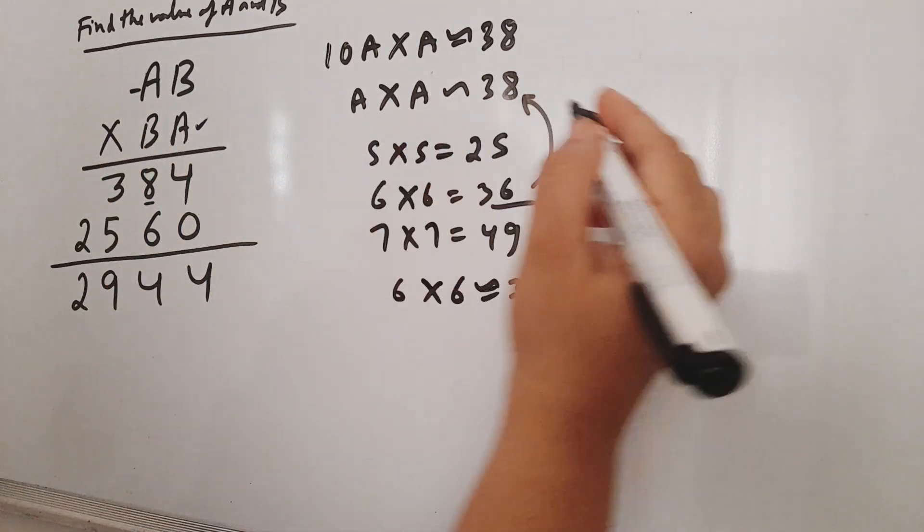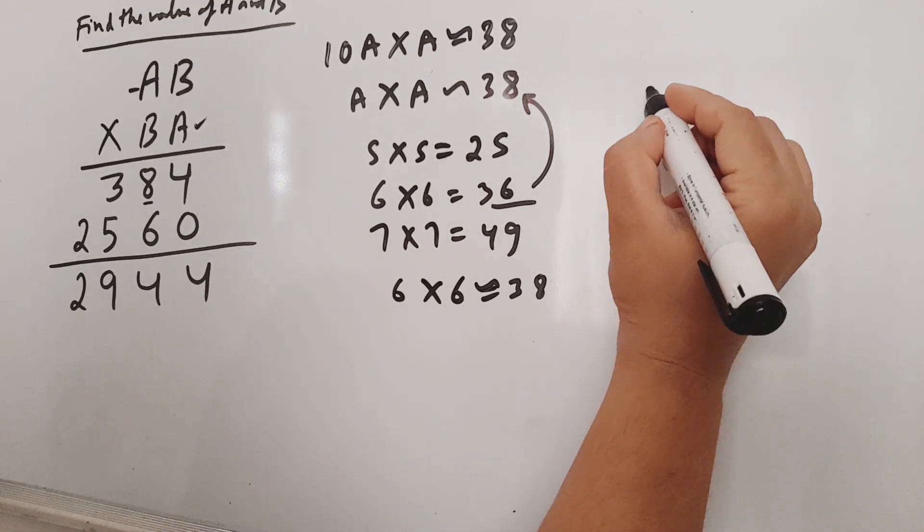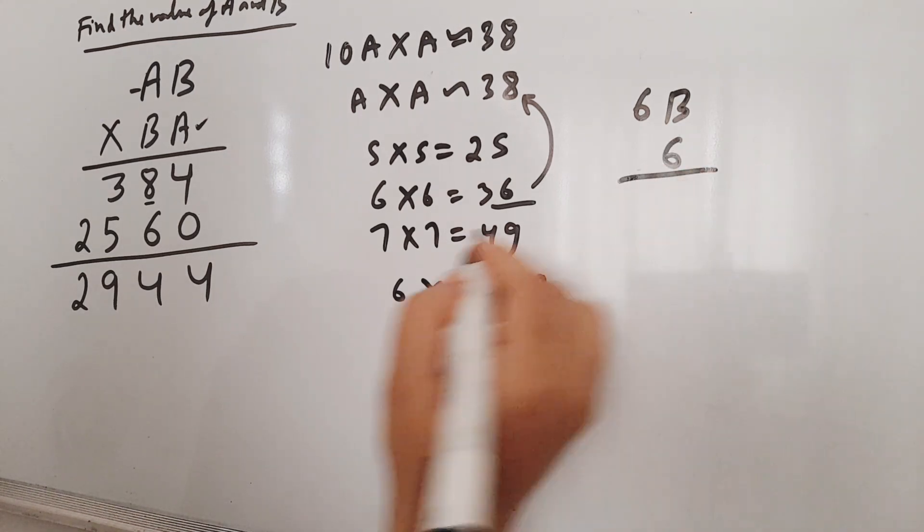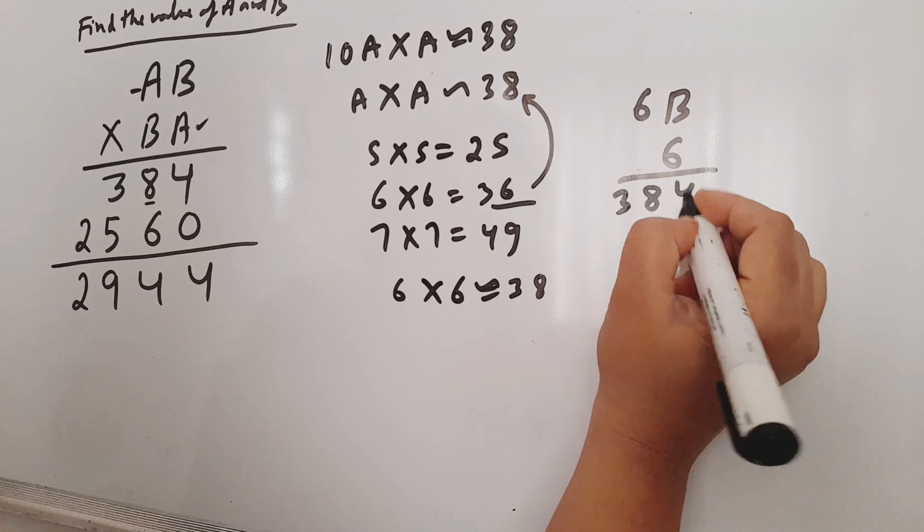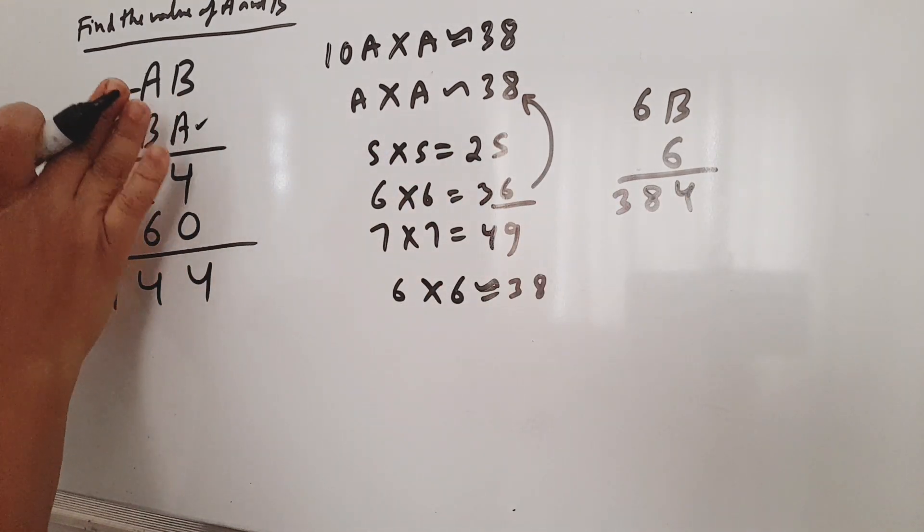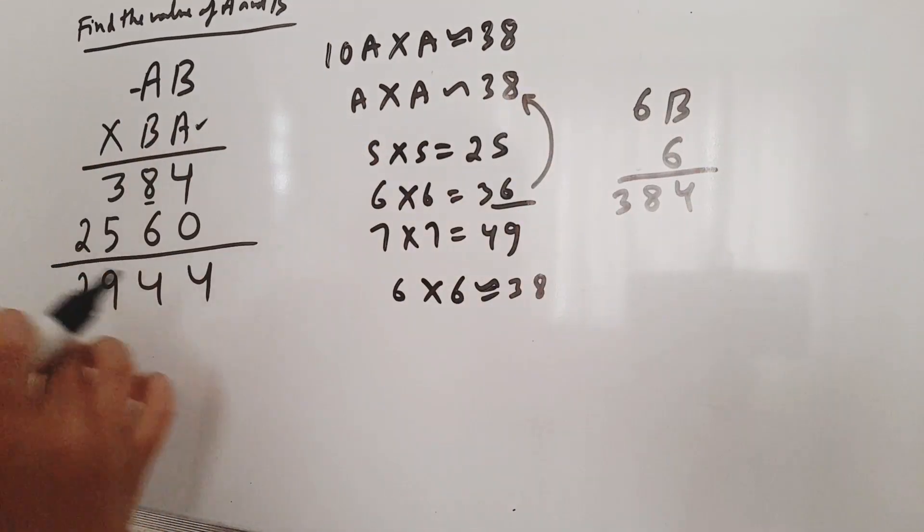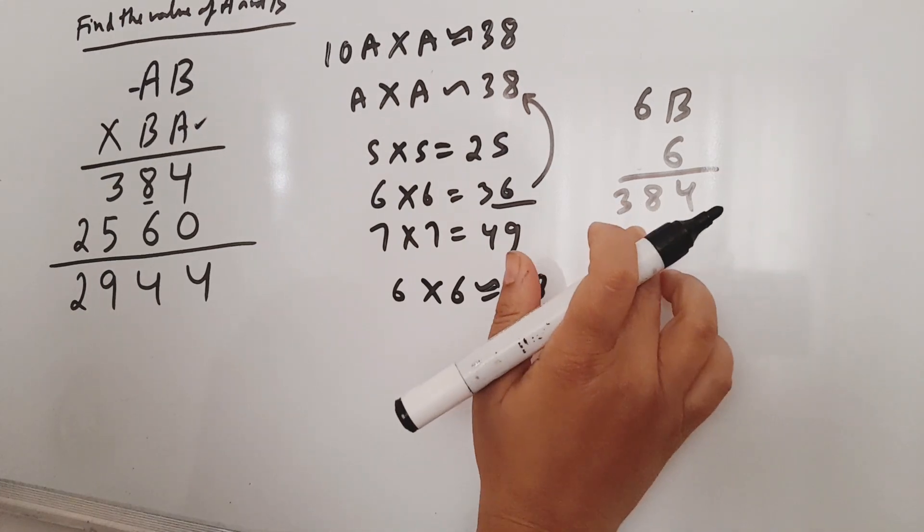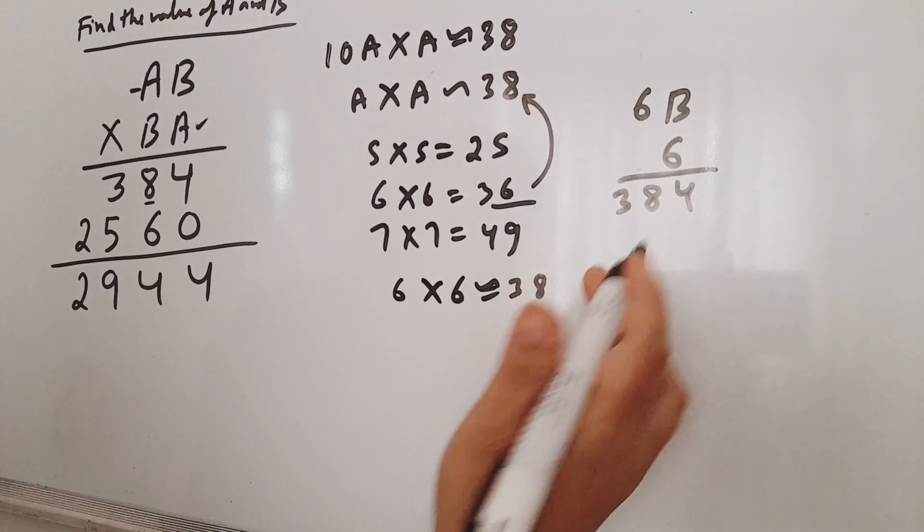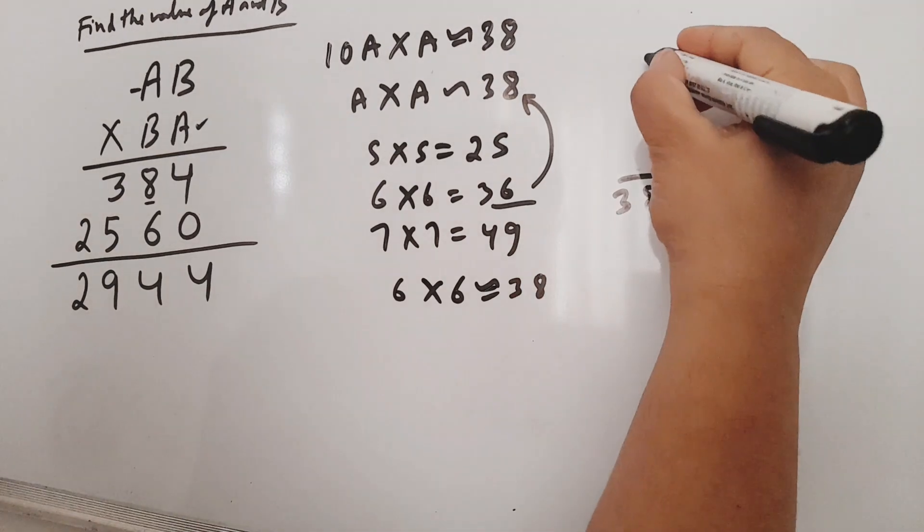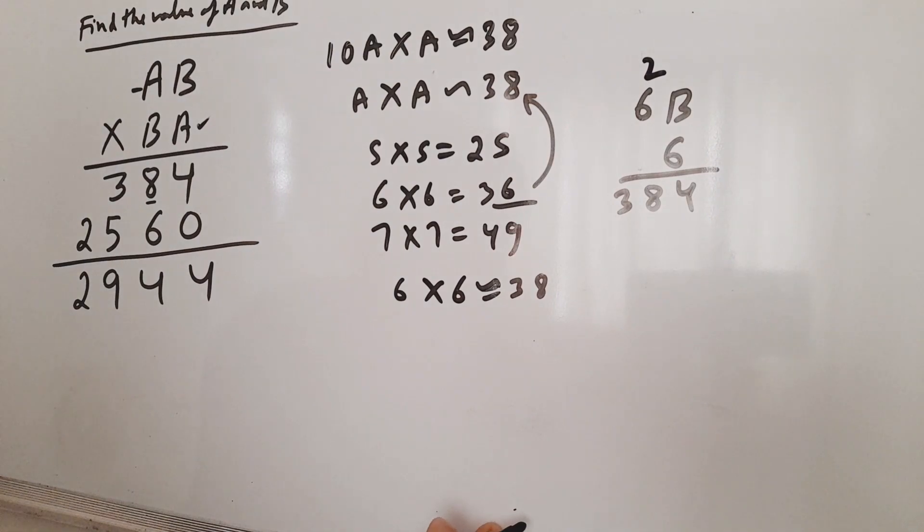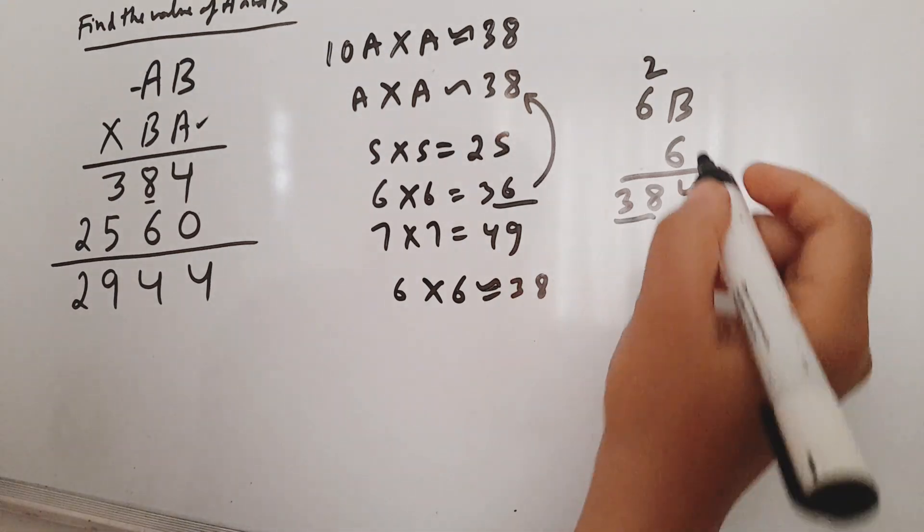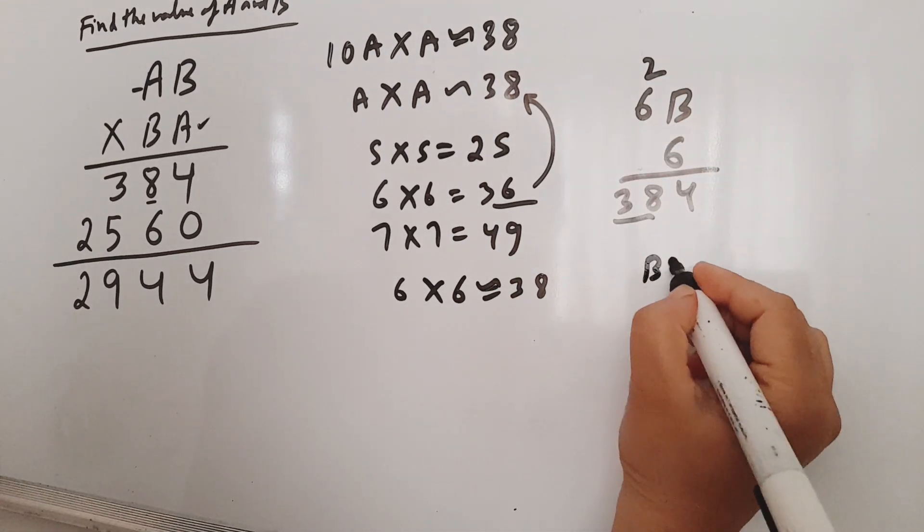We will put it in our equation. 6B into 6, which is 384. We will get 6 into 6 which is 36. This means there must be 2 to carry over. So 6 into 6 is 36 plus 2 is 38.